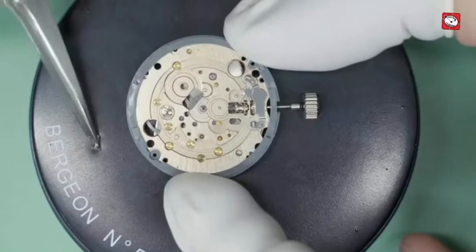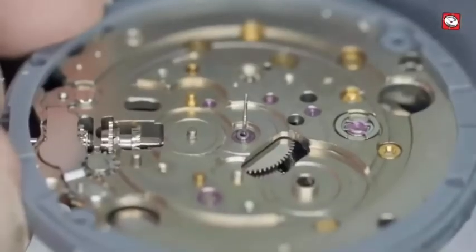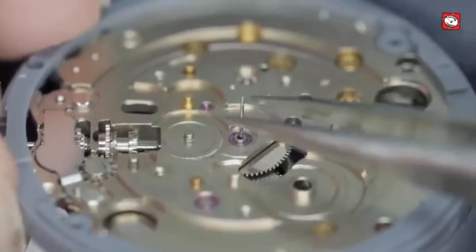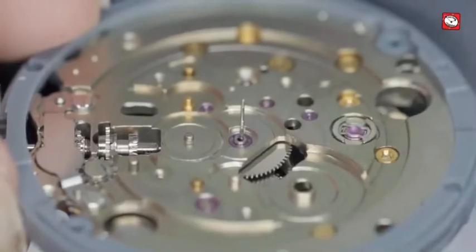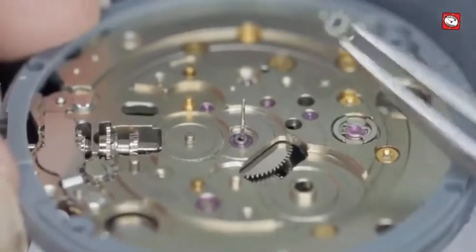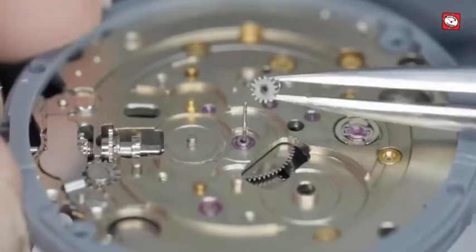Now I can see the real reason why the cannon pinion is loose and unfortunately it's a game stopper. The center wheel arbor is actually completely snapped off and stuck in the cannon pinion. Now this is exactly the reason why the hour and minute hands fail to turn whilst the watch is actually running.